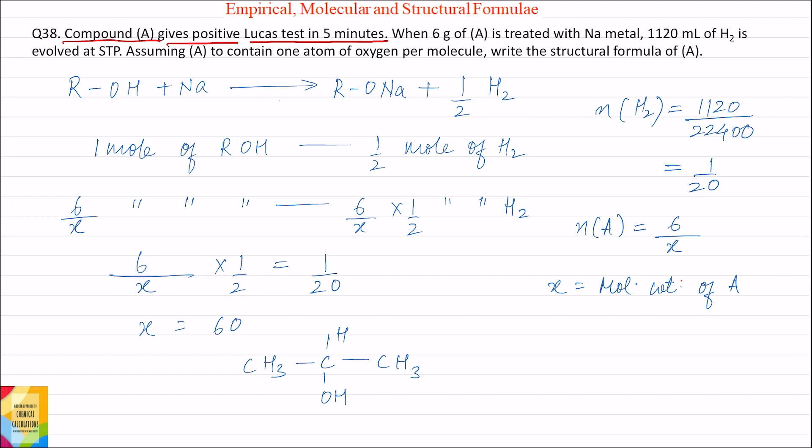Lucas test is used to differentiate between primary, secondary, and tertiary alcohols. Secondary alcohols give Lucas test in 5 minutes. The given compound A contains only one oxygen atom per molecule, so it has one OH group and is a secondary alcohol.